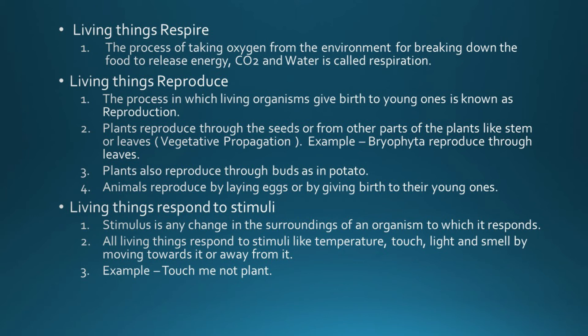Living things also reproduce. The process in which living organisms give birth to young ones is known as reproduction. Plants reproduce through seeds or from other parts of the plant like stem or leaves, which is also known as vegetative propagation. For example, bryophytes reproduce through leaves, and plants also reproduce through buds as in potato. Animals reproduce by laying eggs or by giving birth to their young ones.